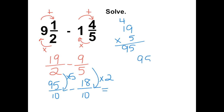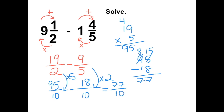95 minus 18 gives us 77 over 10. Now the last step is to convert this to a mixed fraction. 10 goes into 77 seven times, which equals 70, and we're left with 7 over 10. The denominator stays the same.